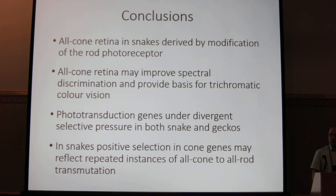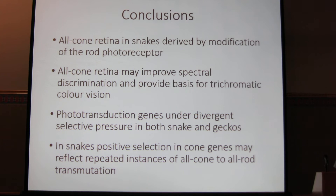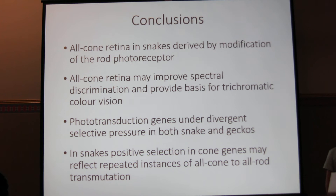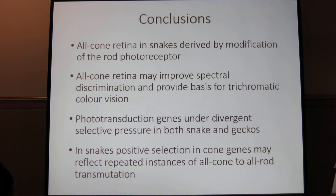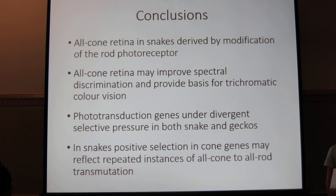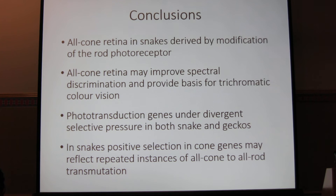To conclude: the all-cone retina of snakes is derived by modification of the rod photoreceptor, and the all-cone retina improves spectral discrimination and provides the basis for trichromatic color vision in some diurnal Caenophidian snakes. Photoreceptor transmutation genes are under divergent selective pressures, and these pressures seem to be similar in both snakes and geckos, related to these transmutation events. Finally, in snakes we have positive selection of cone genes, and that may reflect repeated instances of all-cone to all-rod photoreceptor transmutation.